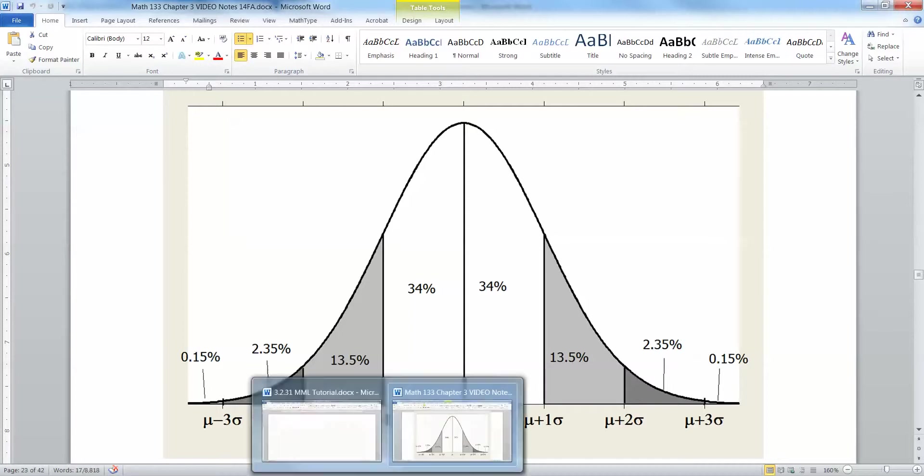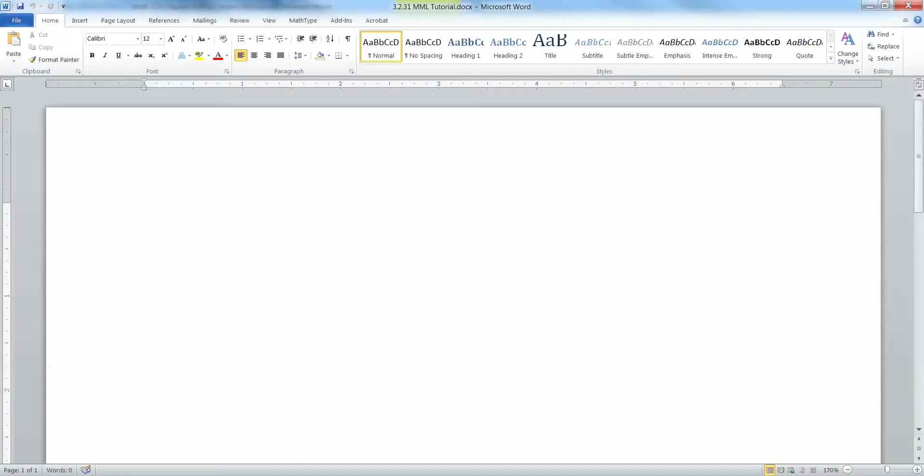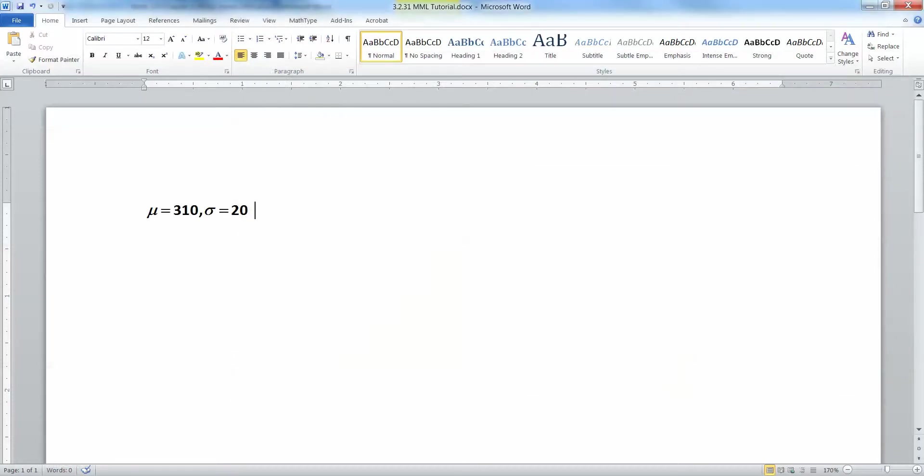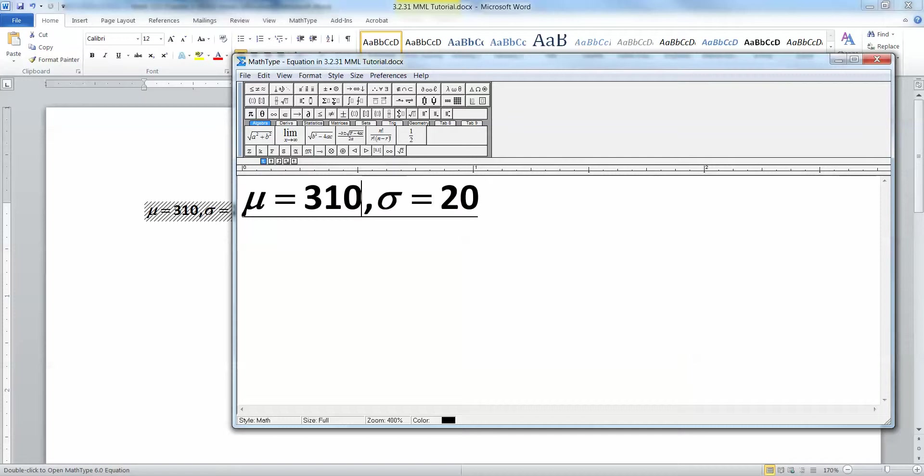So if we think about our particular problem, we have a mu of 310 and we have a sigma of 20. Those were given to us. Technically, they're both in grams.